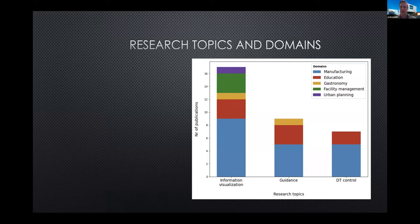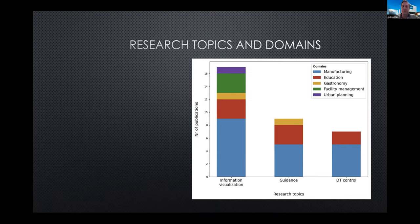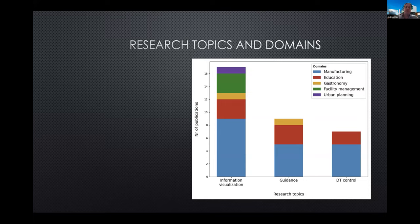We introduced a 'guidance' category that included guided assembly and training scenarios, with some overlaps between categories. On the right-hand side we see 'digital twin control,' which subsumes all works mentioning virtual dashboards, adjustments, and configuration. The distribution of research topics shows that information visualization was covered by most papers — possibly because it serves as the base for other categories — while guidance and digital twin controls were each mentioned by less than half of the papers.